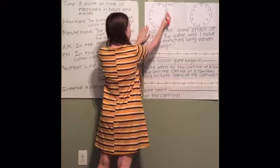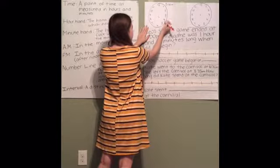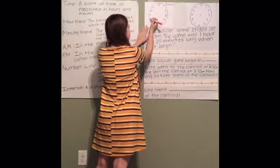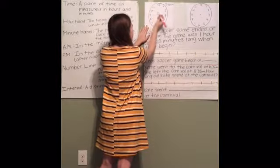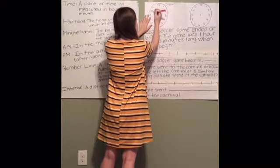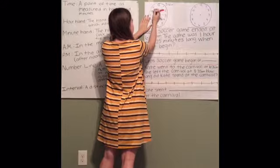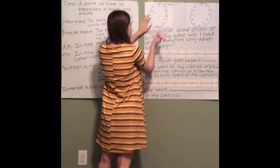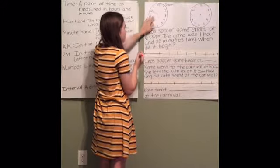0, 5, 10, 15, 20, 25, 30, 35, 40, 45, 50. So we'll put our long hand here — the minute hand — and that's how it should look on our clock.